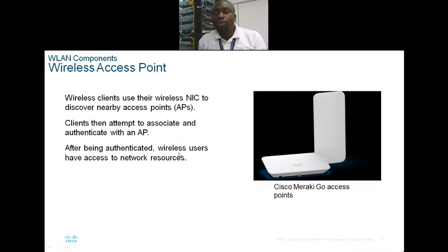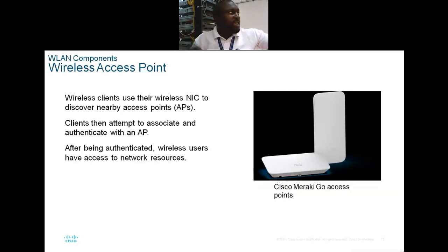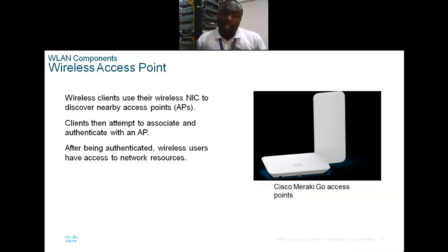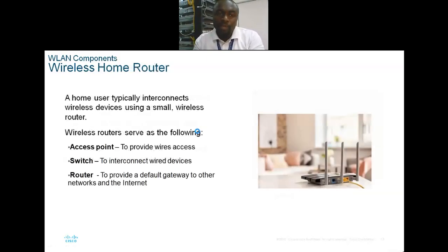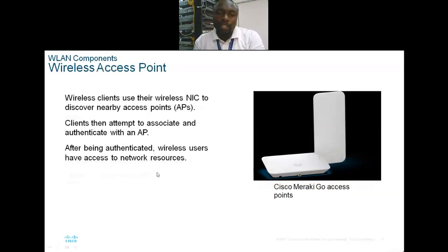When placing home routers or access points, note that wireless signals pass through glass but not well through cement, thick walls, or a lot of metal. The difference between a wireless router and an access point: wireless clients discover nearby access points, then attempt to associate and authenticate with the AP. After being authenticated, wireless users have access to network resources.